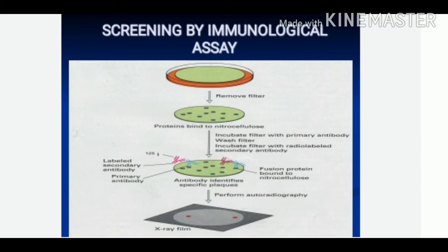As can be seen in the diagram, first the clone is transferred on a nitrocellulose membrane to get a similar pattern of colonies as on the master plate. The cells on the membrane are lysed, and the released protein is denatured and allowed to bind to the membrane. In the next step, treatment with primary antibody is done. The membrane is incubated with an antibody having immunoreactivity towards a particular protein. The primary antibody will bind to the target protein due to its exclusive specificity towards the antigen.